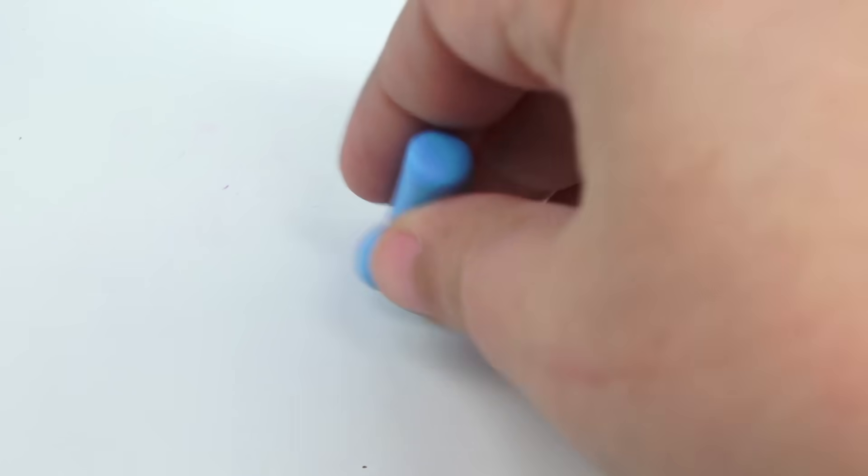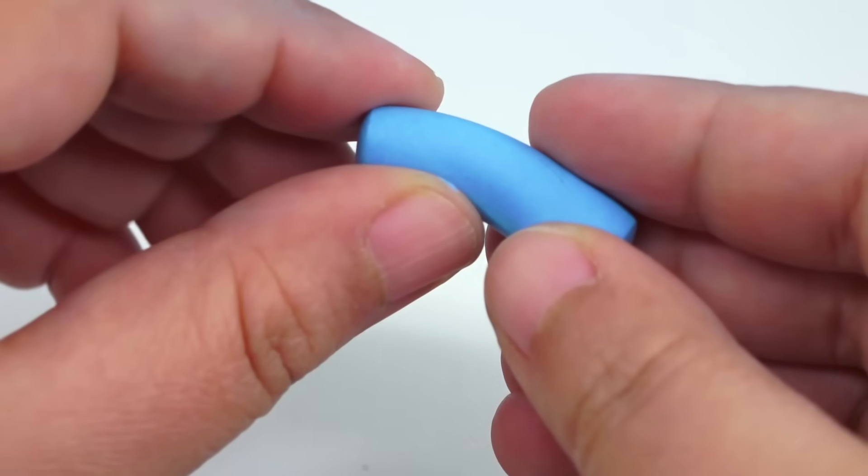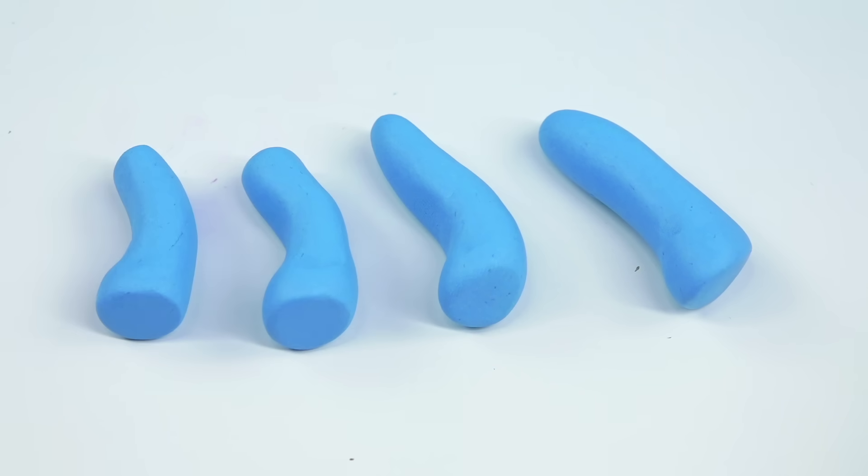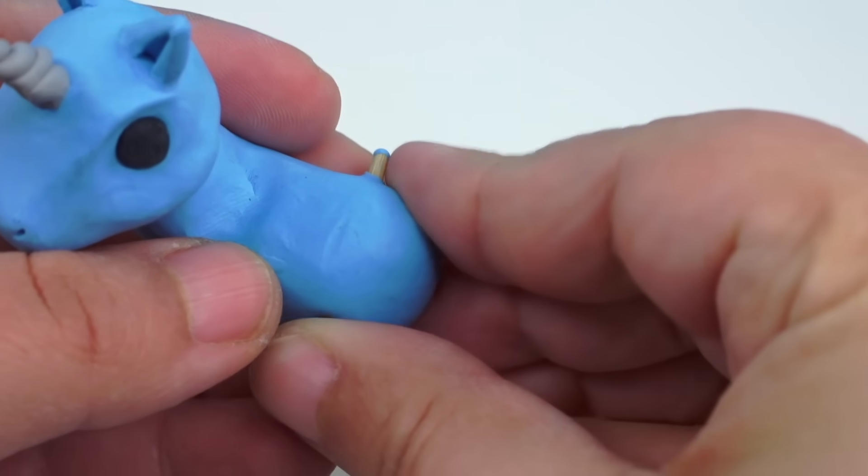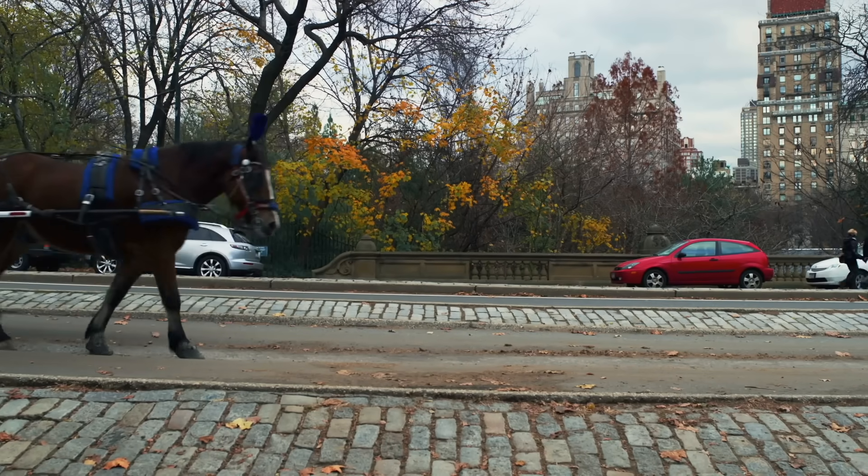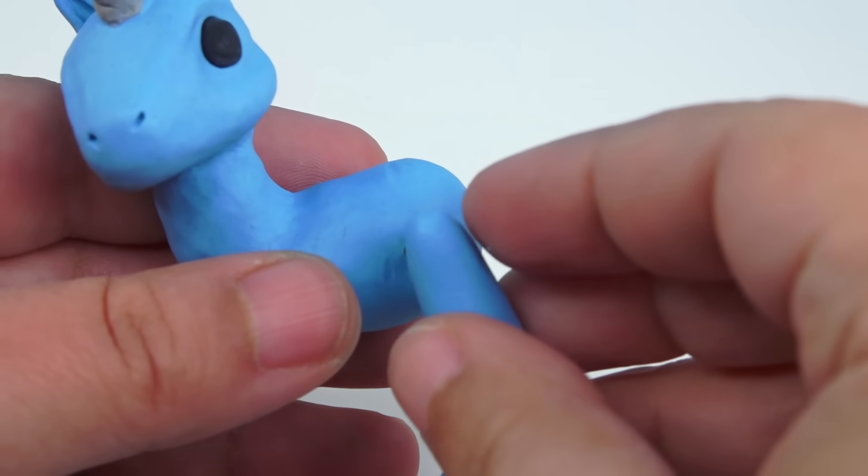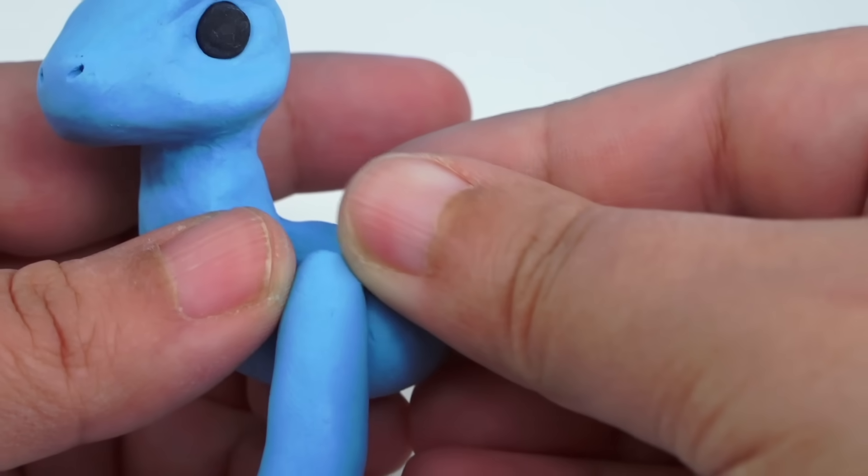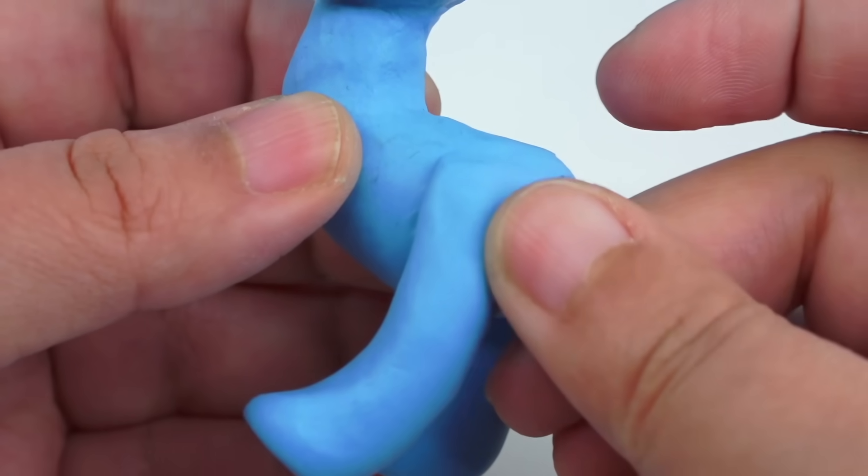For all four of the legs thankfully it's pretty much the same thing. You're going to make a log with your clay stand it up push the bottom part so it creates a bit of a hoof, hooves cluck cluck cluck, and then just ever so lightly create a tiny bend just to kind of give an idea that it's not a stiff horse.